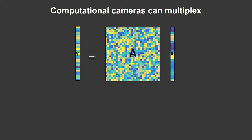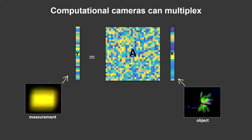If A is something weird — some linear combination of different points on your object — I call this multiplexing, because every measurement corresponds to the linear sum of contributions from different parts of the scene. This multiplexing can be handled by algorithms; you invert A and solve for X. But multiplexing also enables new things, like compressed sensing — if you multiplex, you have a chance to solve underdetermined problems.